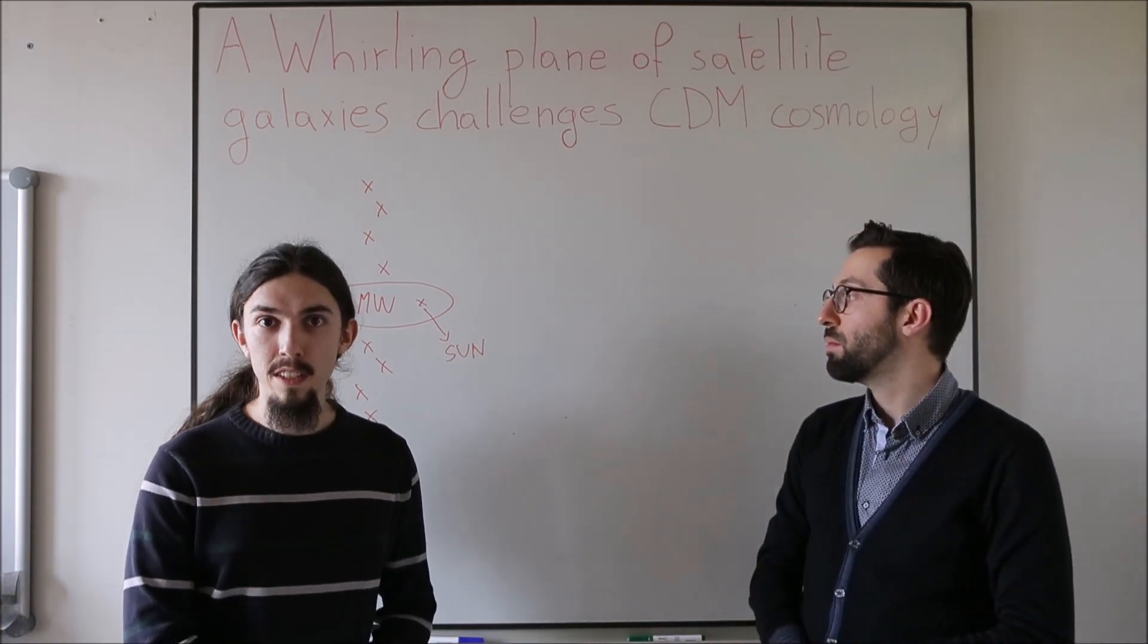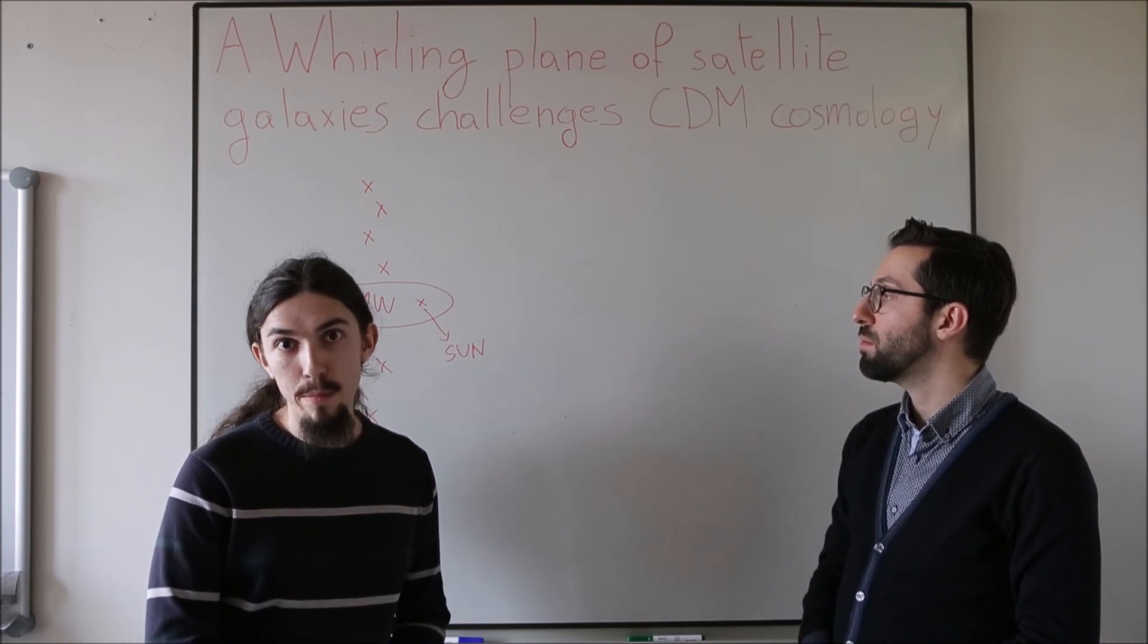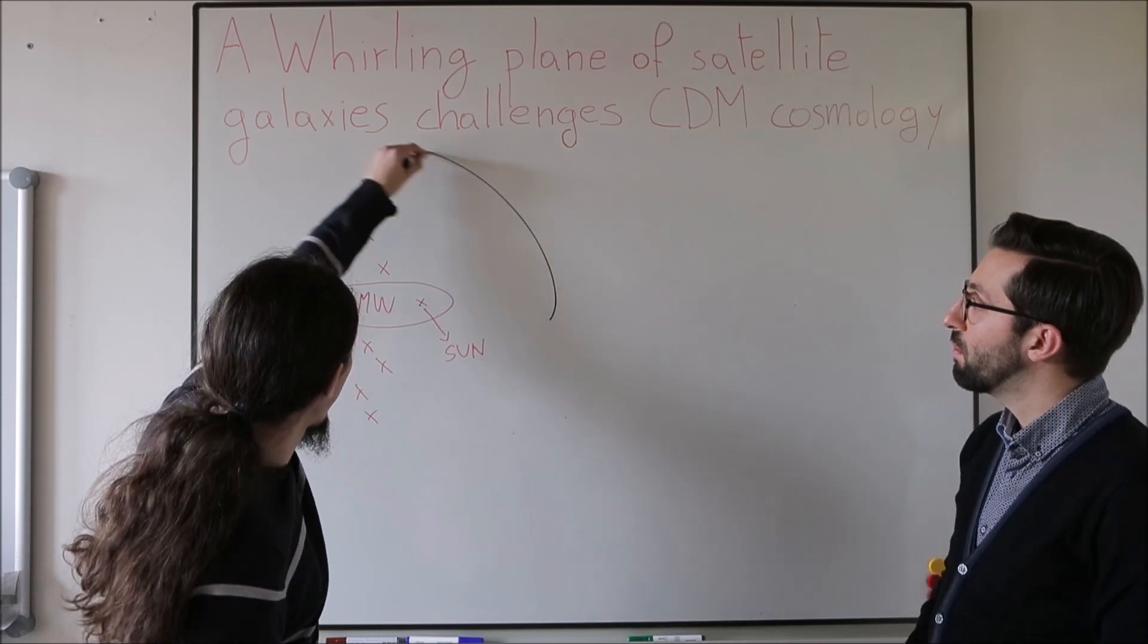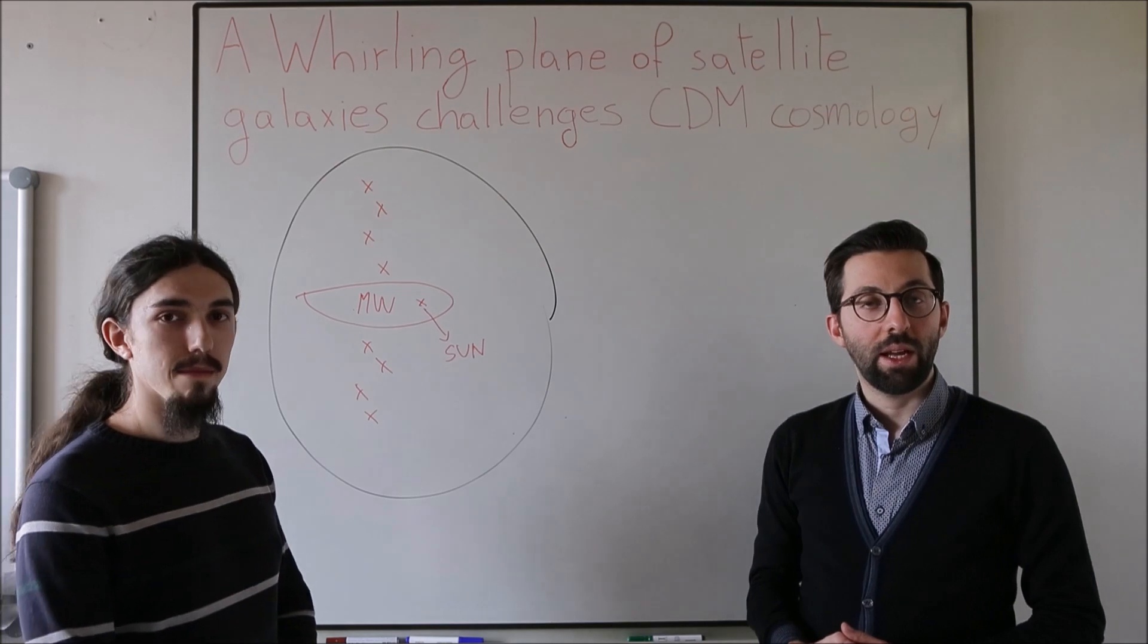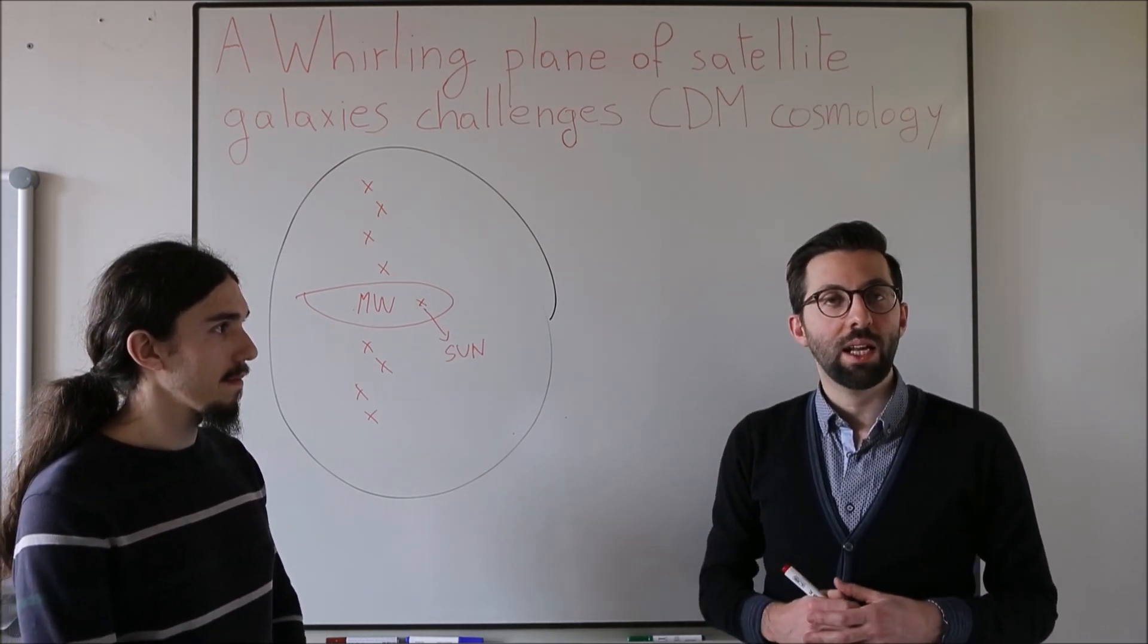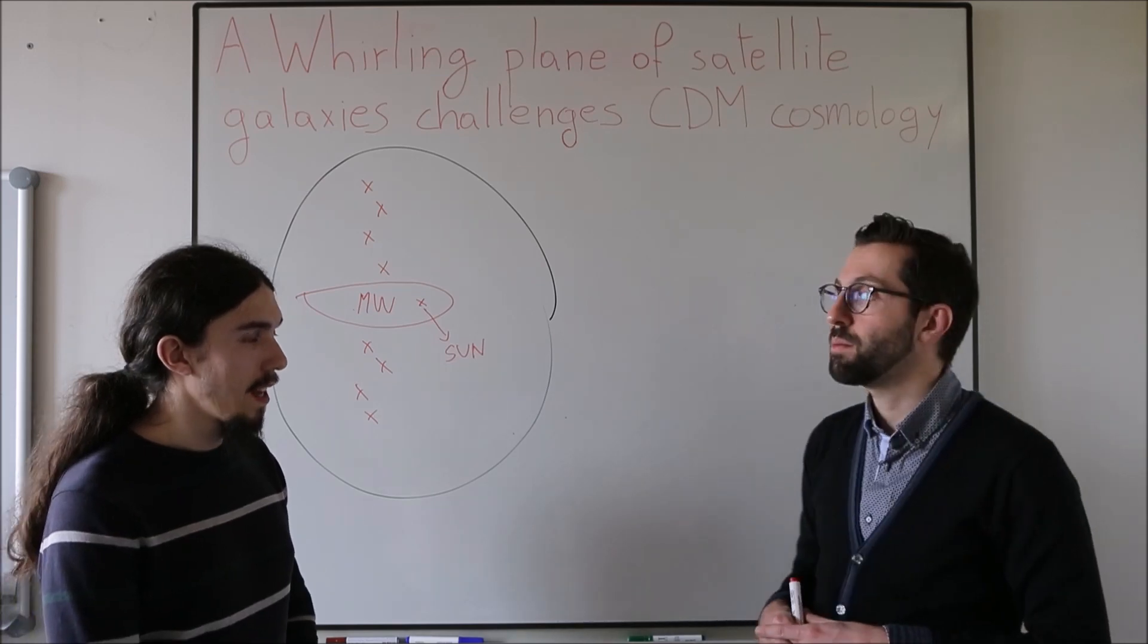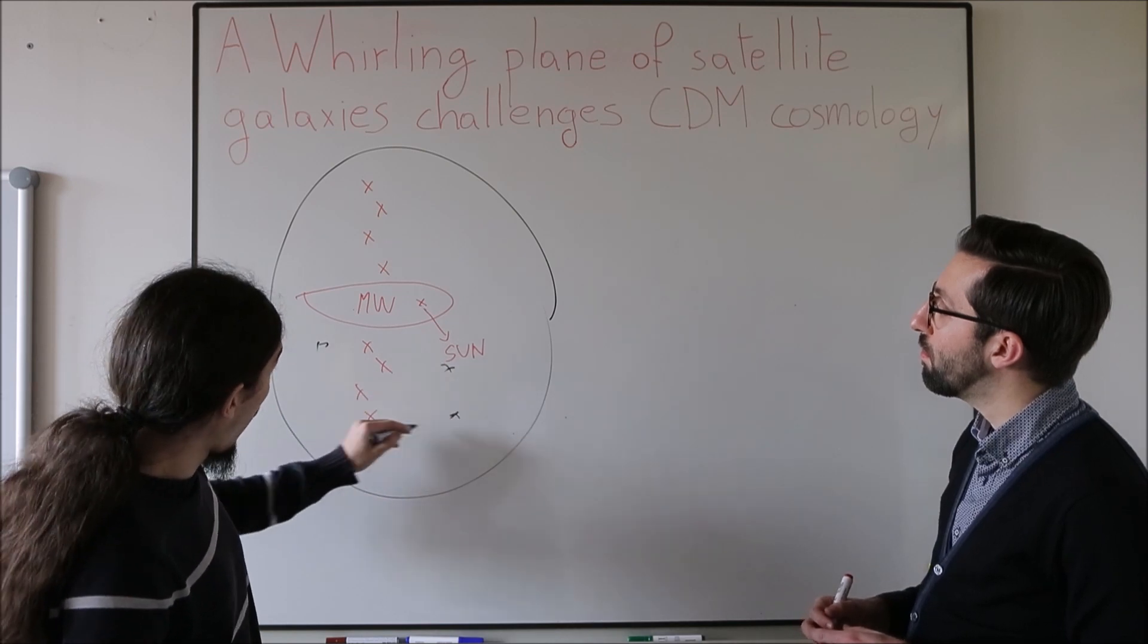This is at odds with our understanding of cosmology. According to the standard model of cosmology, galaxies like the Milky Way are surrounded by a massive halo of invisible material. We call it dark matter. Something like this. Scientists have simulated the formation of dark matter halos using supercomputers. This simulation can follow the formation of galaxies during the history of the Universe and make predictions about what we should see around us today.